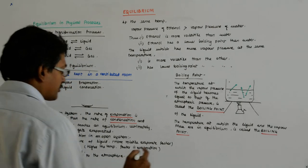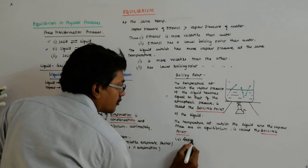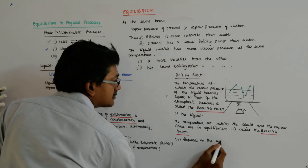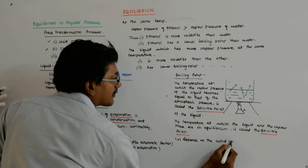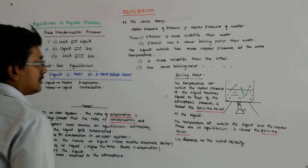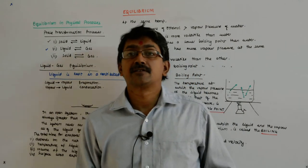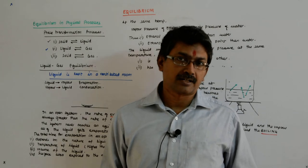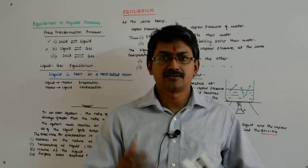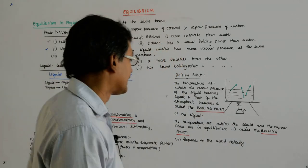It also depends on the wind velocity. On a windy day you'll find clothes drying faster. Or if there is an urgency that arises in the night, maybe your socks are washed, then you tend to put them below the fan. Why? What happens?